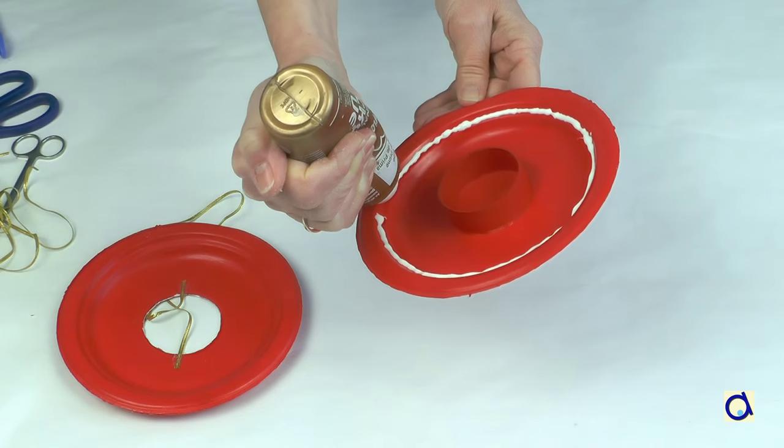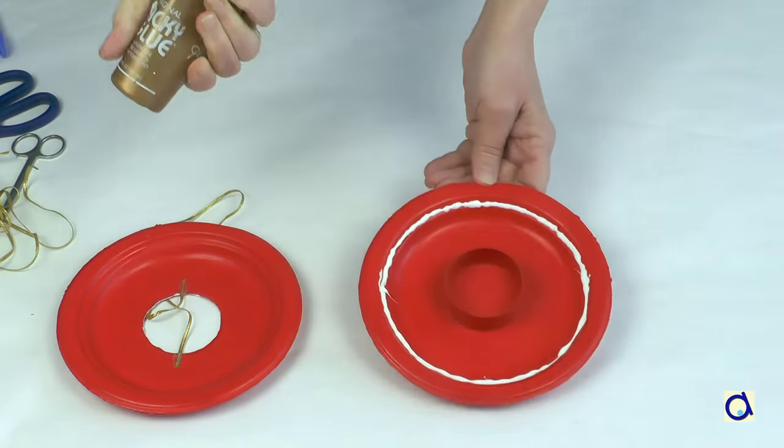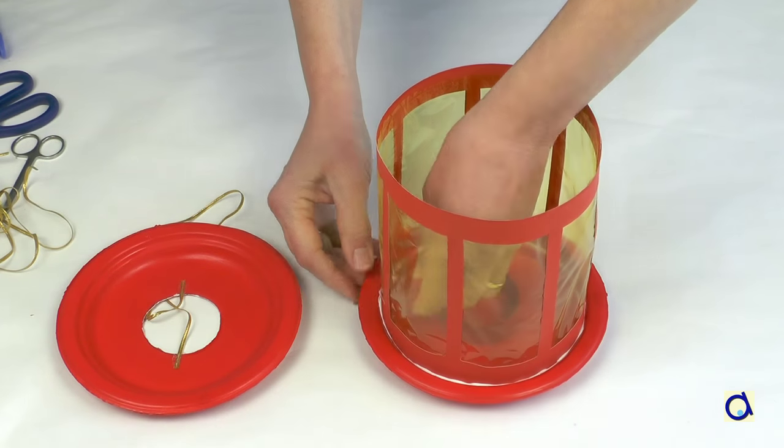Then put white glue in the rim of the plate with the candle holder and place the tube with the cellophane inside the rim of the plate.